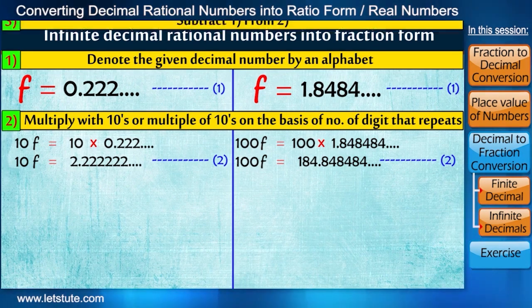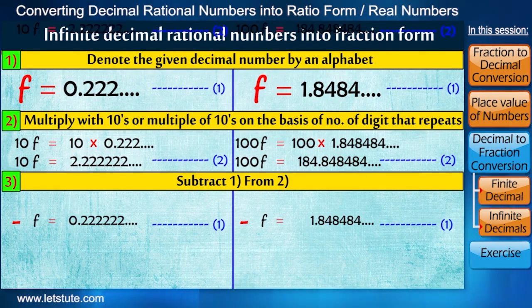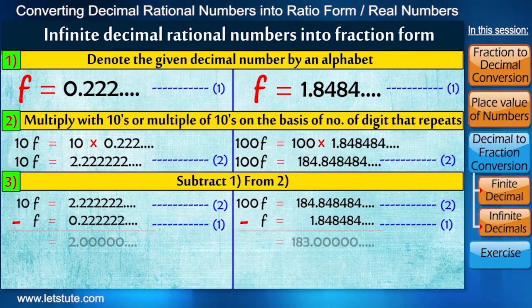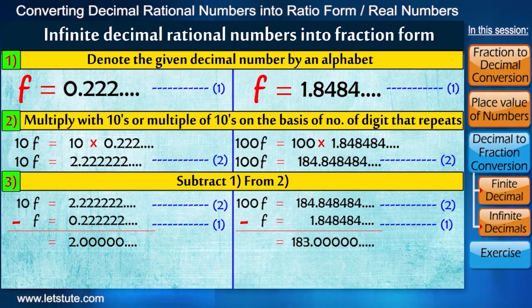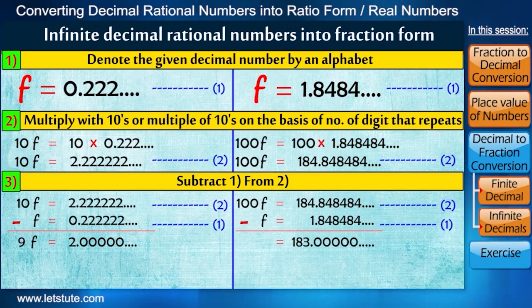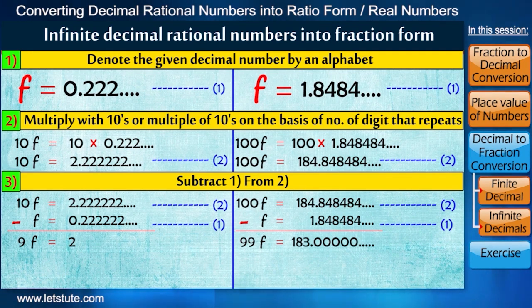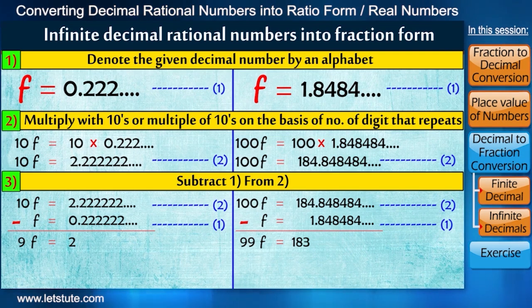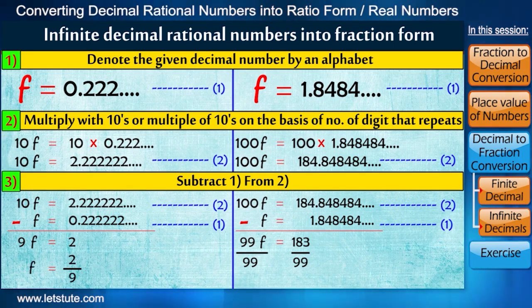So if we subtract 1 from 2, then after decimal, all the digits will be 0. And this is our third step where we'll subtract 1 from 2. And we know that after decimal, if all the digits are 0, then decimal point is removed. And here we simply write 9f equals 2 and 99f equals 183.